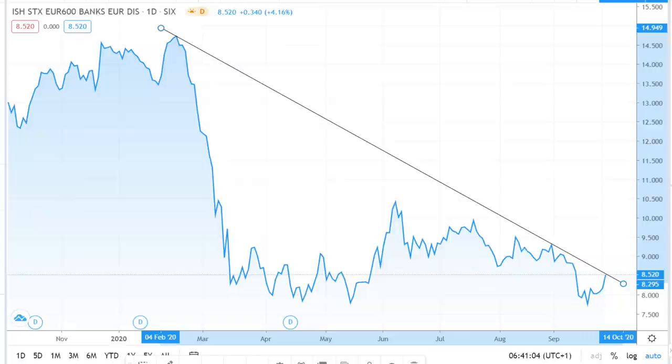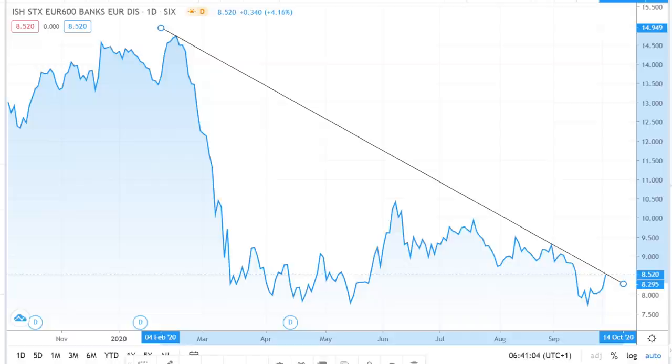Undoubtedly a huge risk is apparent in Europe, and we can see just how badly the top 600 European banks are faring in the SX7P index in this chart.